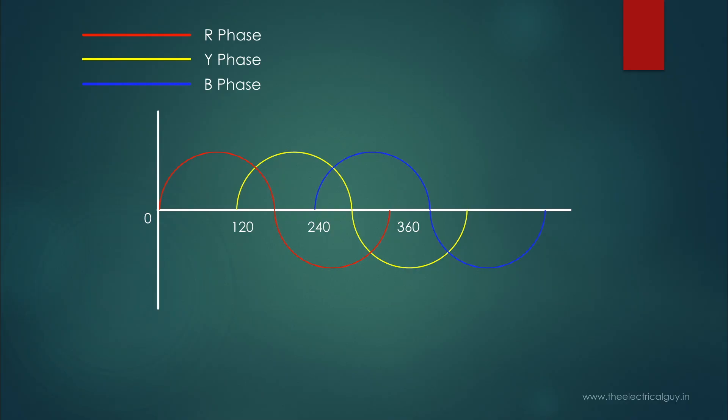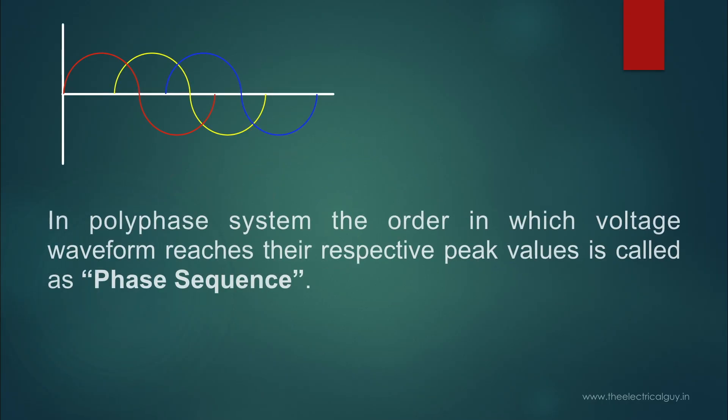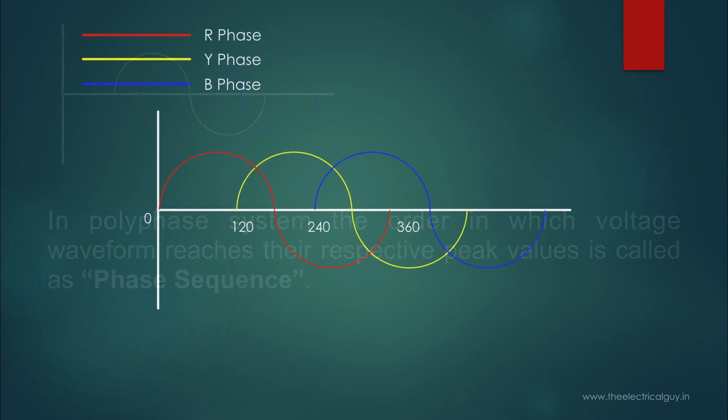In a polyphase system, the order in which voltage waveforms reach their respective peak values is called phase sequence. So in this case, our phase sequence would be R, Y, B, as R phase reaches its peak value first, and then Y, and then B. Phase sequence can sometimes also be called phase rotation. So you need not get confused between phase sequence and rotation as both are one and the same.